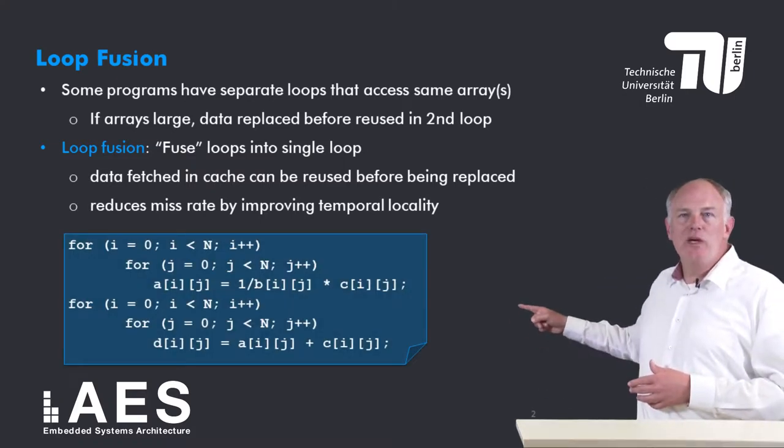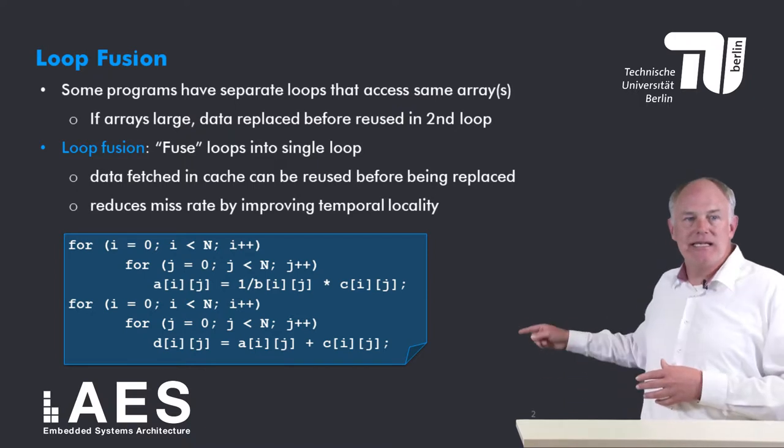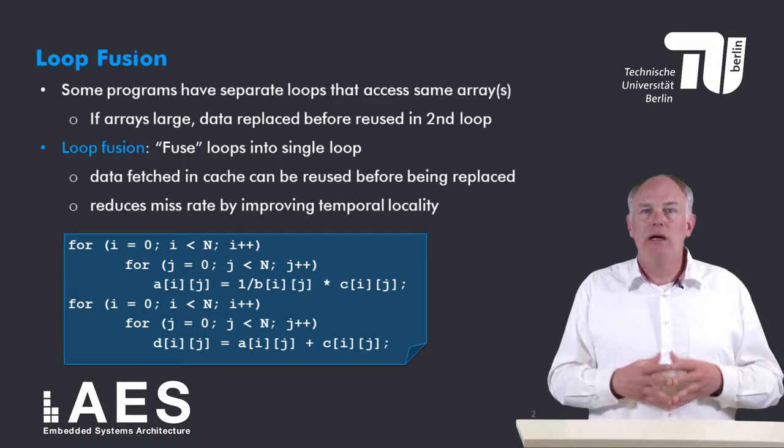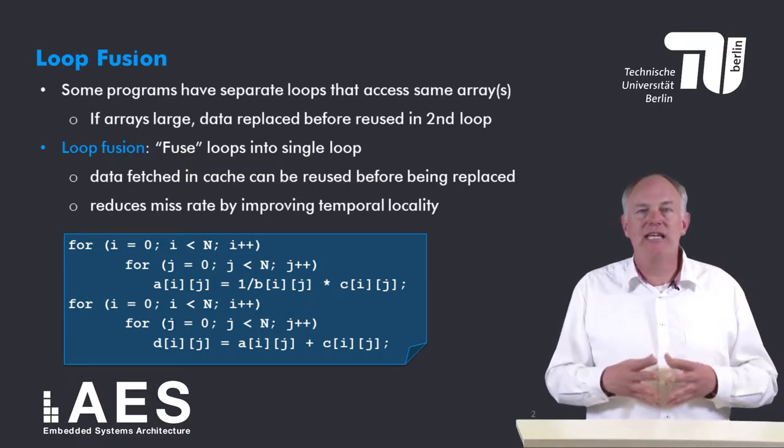Here's a code example with two separate loops. Both loops have the same looping structure. The first nested loop accesses the matrices A, B, and C, and the second nested loop accesses the matrices A, C, and D.